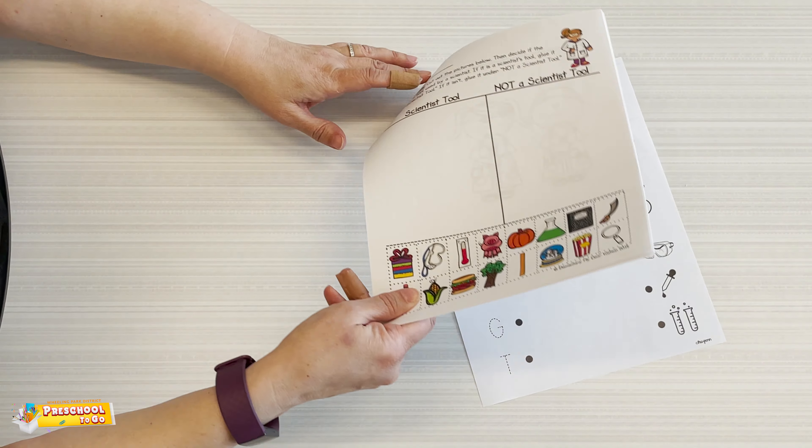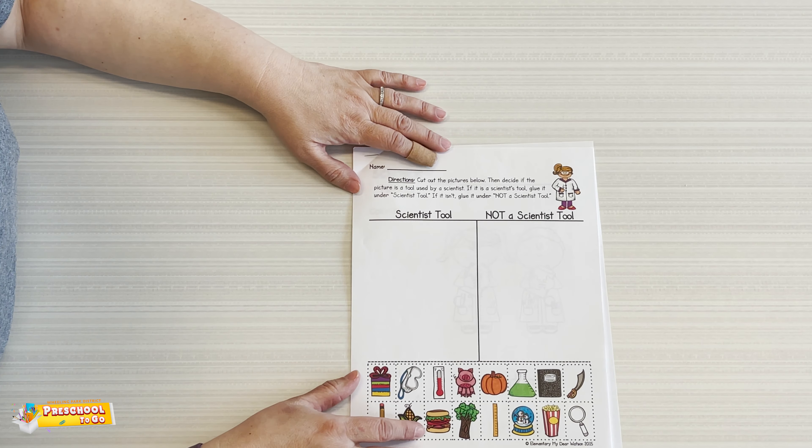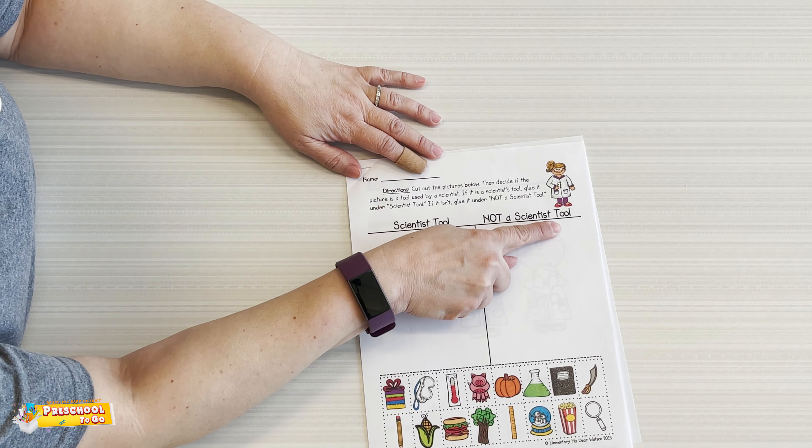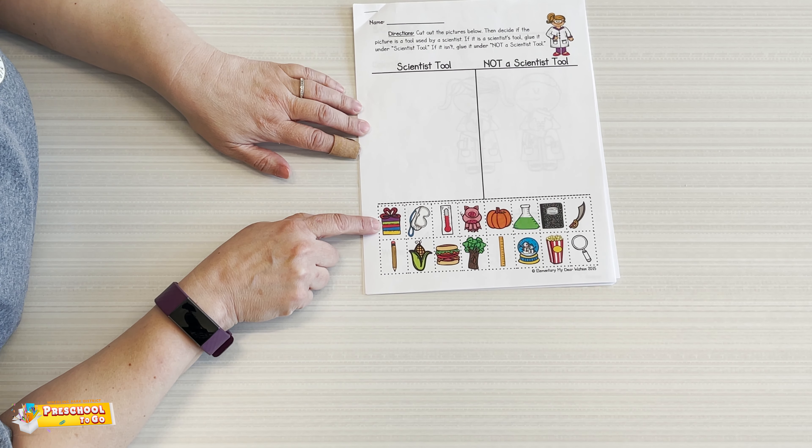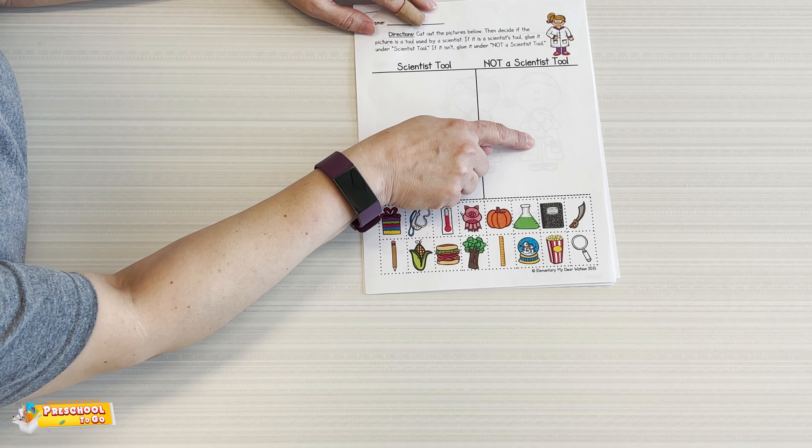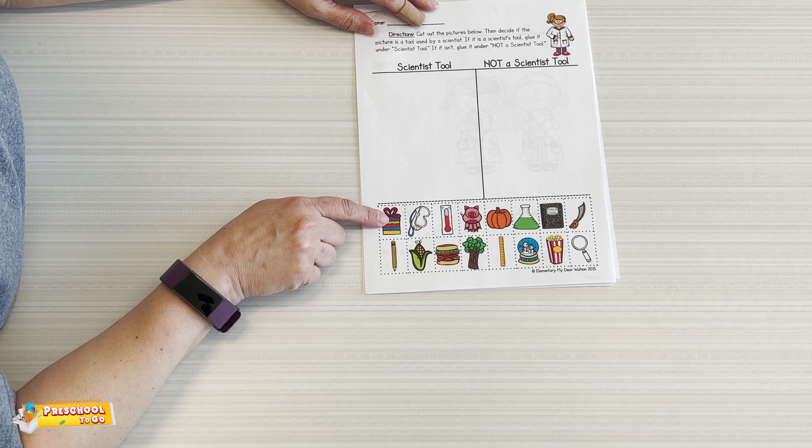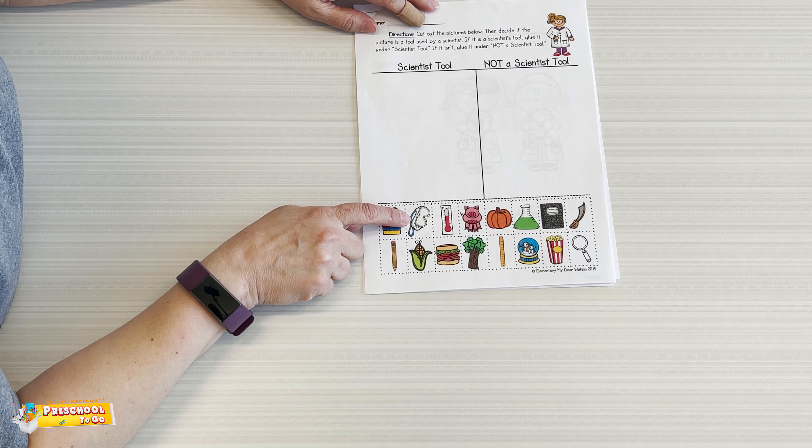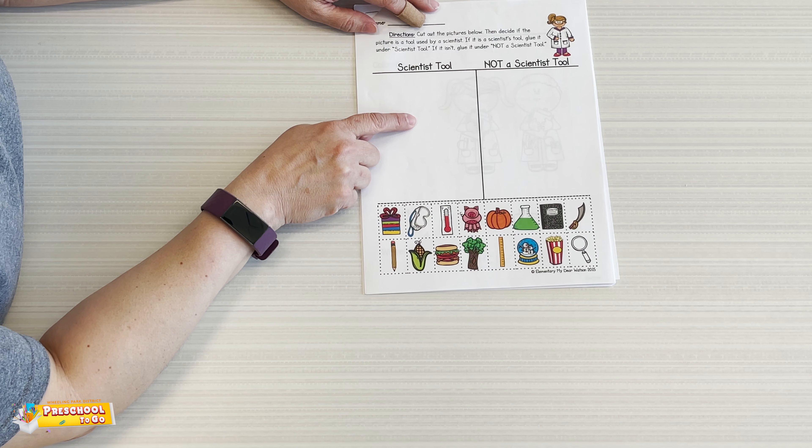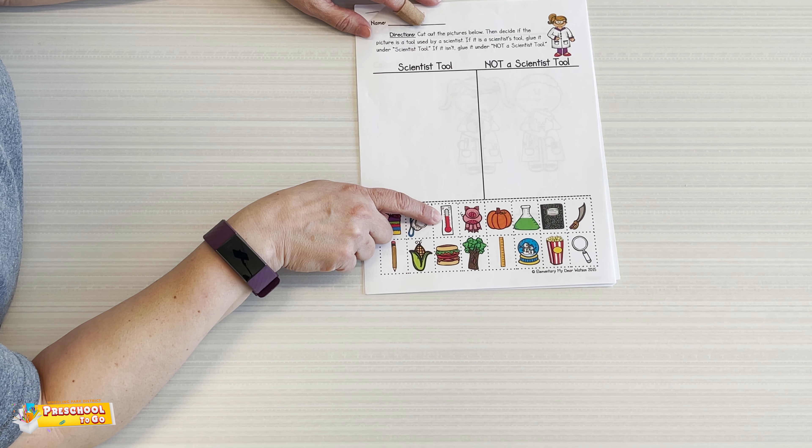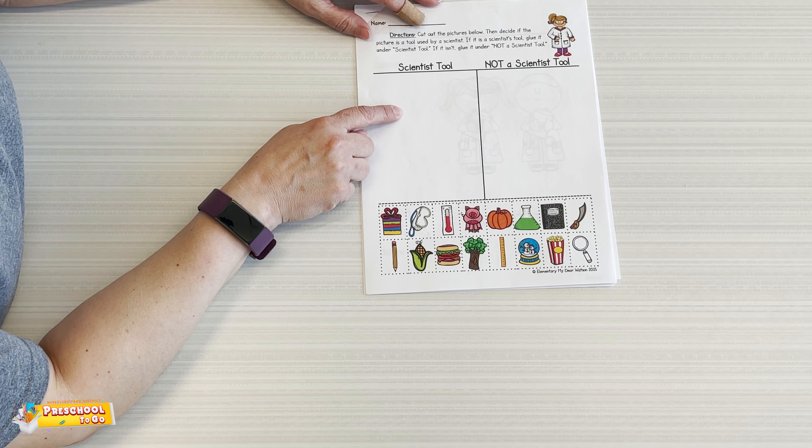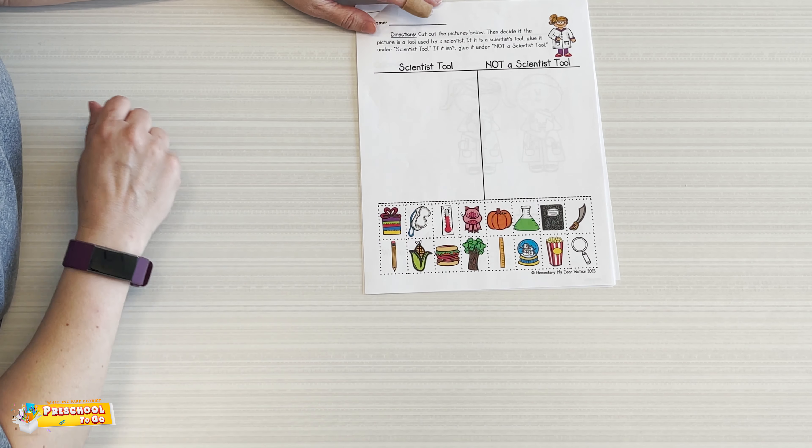And let's go back to the first page and figure out what are scientist tools and not scientist tools. For example, a present. Would that be a scientist tool or not a scientist tool? Even though it's fun, it would not be a scientist tool. How about goggles? That would be a scientist tool because scientists use those all the time. How about a thermometer? That would be a scientist tool. Go through the rest of these and have lots of fun.